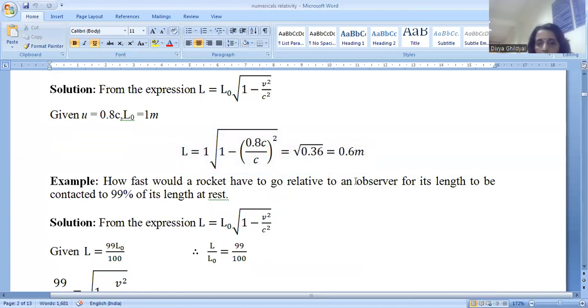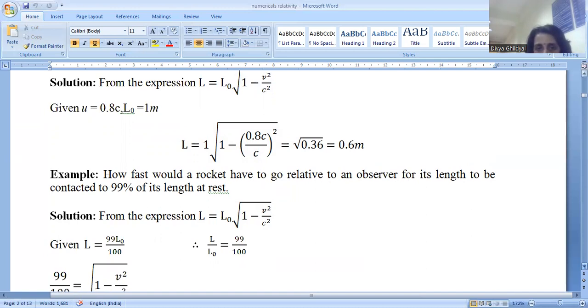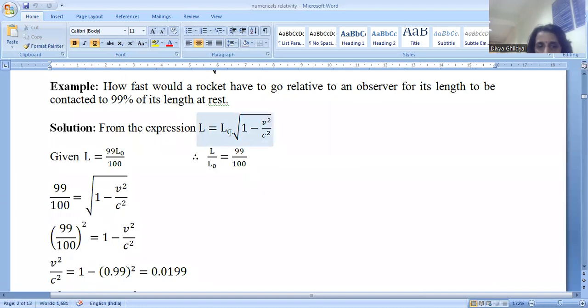How fast would a rocket have to go relative to an observer for its length to be contracted to 99% of its length at rest? From the length contraction formula, I know that L is equal to L not into under root 1 minus v square by c square. We have been given that the length will be contracted to 99% of its length. Hence, L is equal to 99% of L not. That means L upon L not is 99 upon 100. This is just I am writing it this way because my next step will be squaring both sides of the expression. So 99 upon 100 is equal to under root 1 minus v square by c square. You square both sides of the equation.